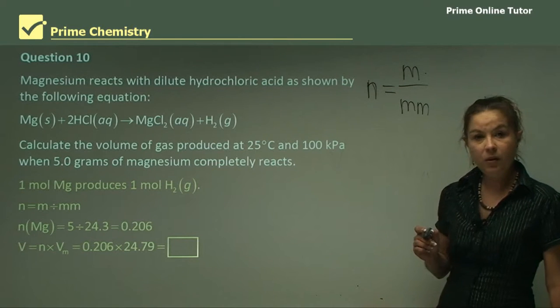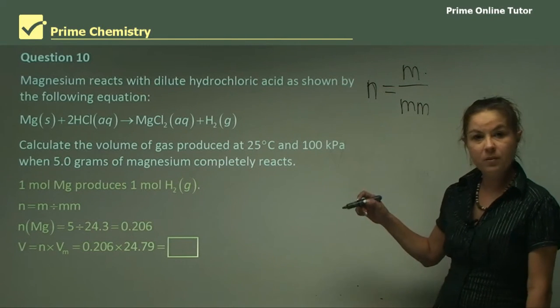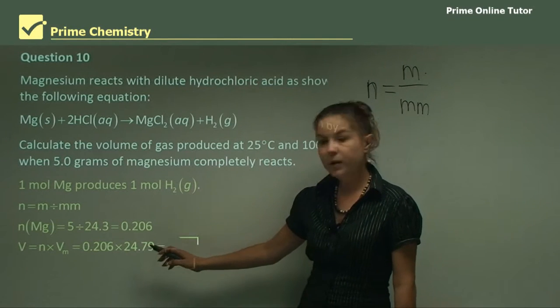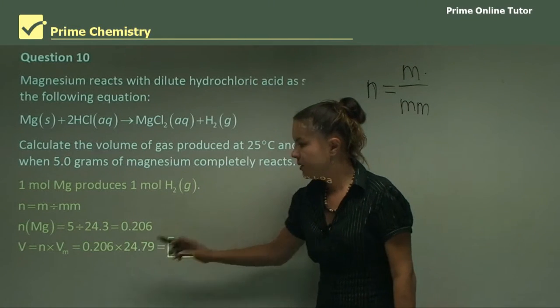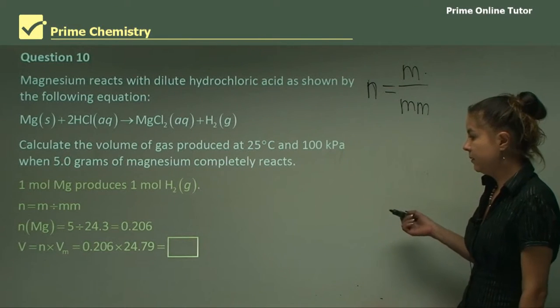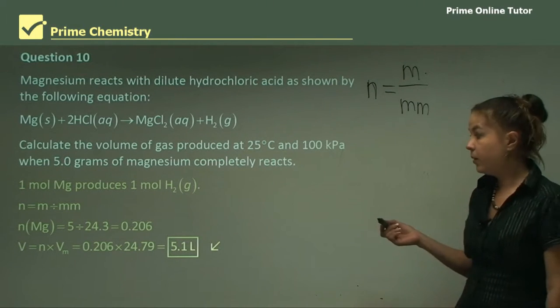Now, using our volume equation, V equals moles times molar volume, we get 0.206 times 24.79, which is our molar volume at 25 degrees. And we get 5.1 liters.